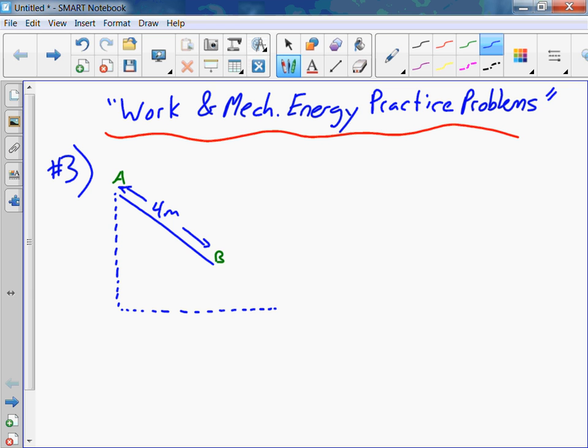The slide makes a 40 degree angle with the horizontal. At the bottom, at point B, Lucy reaches a speed of 3.2 meters per second, and it's 40 centimeters off the ground.